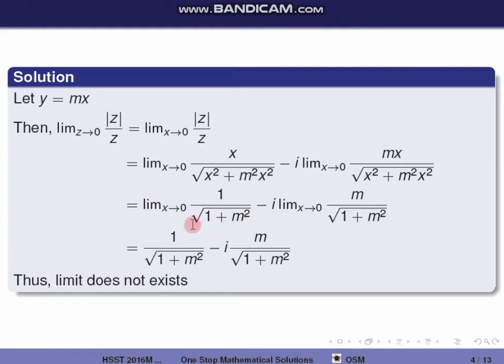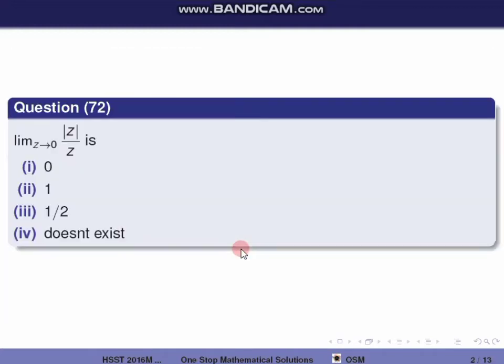So we get equal to 1 by square root of 1 plus m squared, minus i times m by root of 1 plus m squared. This limit depends on m, the slope of the path. Since we get different values for different m, the limit is not unique. Therefore, limit z tends to 0 of mod z by z does not exist. The correct option is the fourth one.